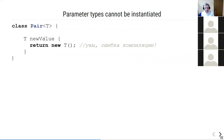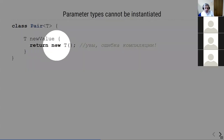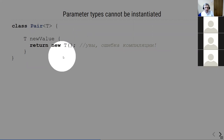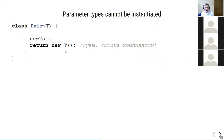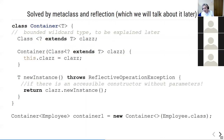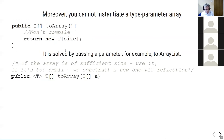Type parameters cannot be instantiated — you cannot write 'new T()' because the compiler doesn't know which constructor to call. This can be overcome using reflection and meta-classes. Similarly, you cannot instantiate a type parameter array like 'new T[size]' — it won't compile because the actual type of T is unknown at runtime.